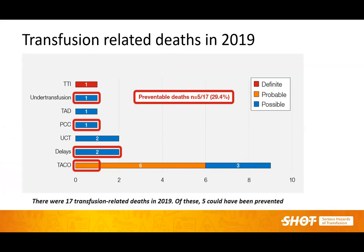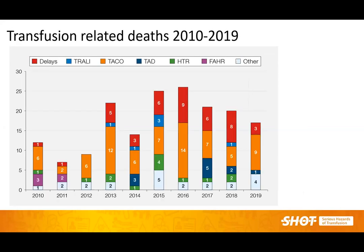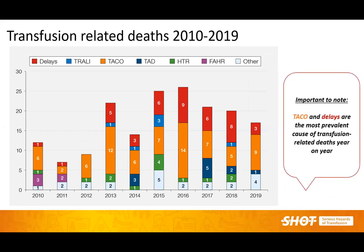Looking at transfusion related deaths reported in 2019, there were 17 transfusion related deaths, of which five could definitely have been prevented. The causes were largely under-transfusion or delays, accounting for two cases, or TACO, with one related to delayed PCC administration. Looking at the trend of transfusion related deaths over the last decade, TACO and delays are the most prevalent cause year on year, and every effort needs to be made to address these.